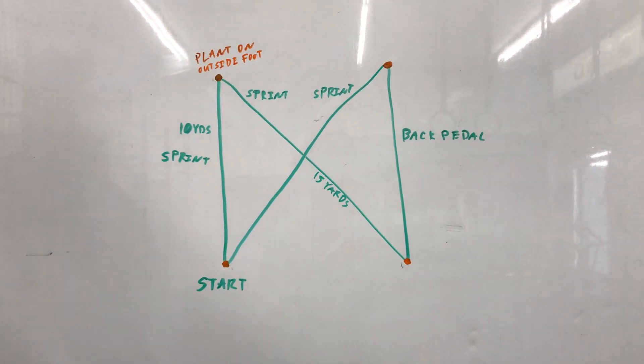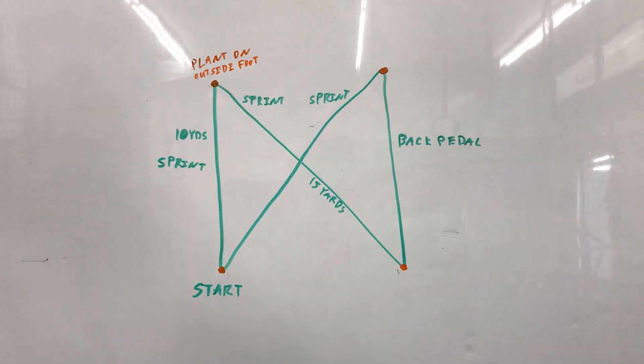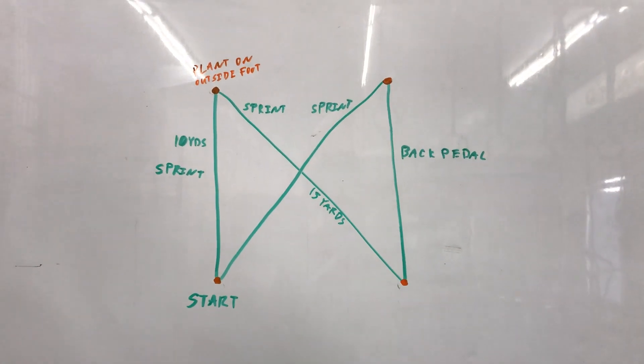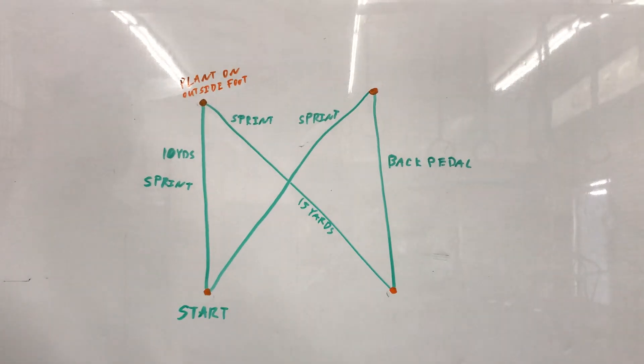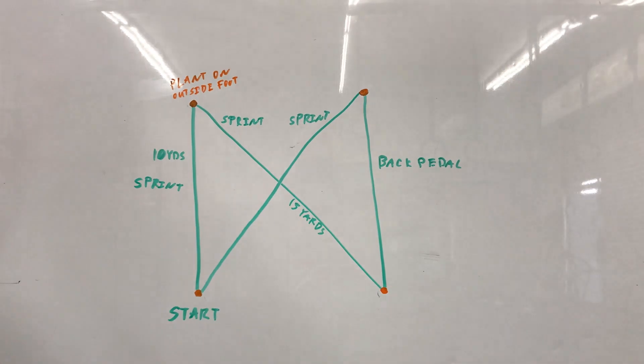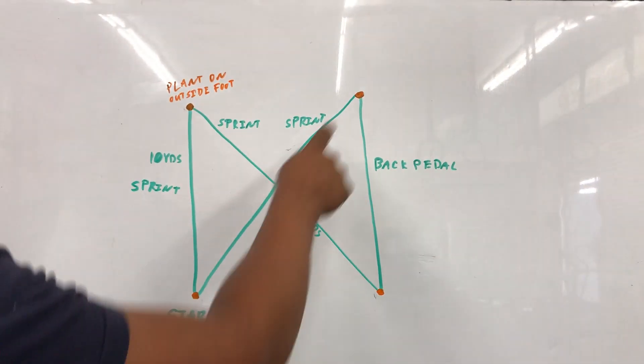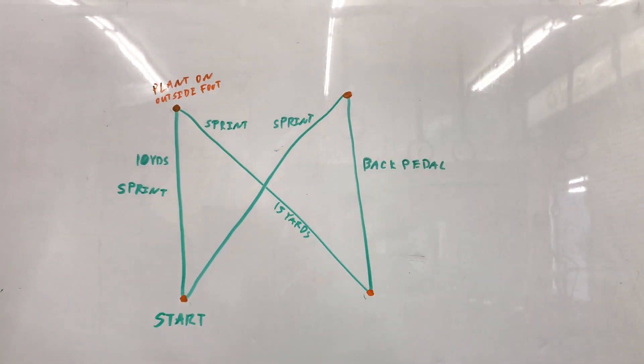Alright guys, here's what we have today for this drill. We are setting four cones apart like a box. Cones on the outside are going to be 10 yards apart, cones diagonally are going to be